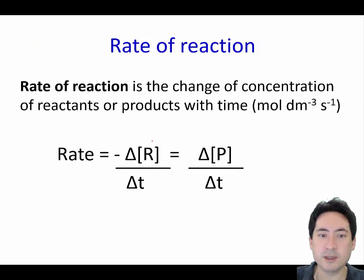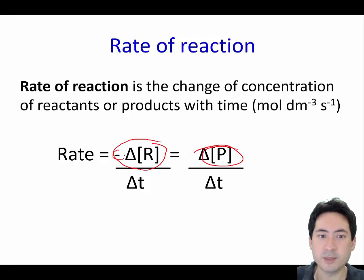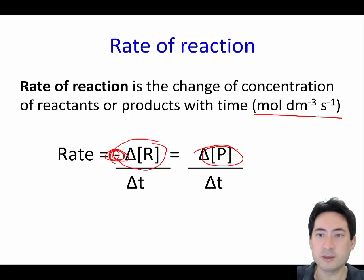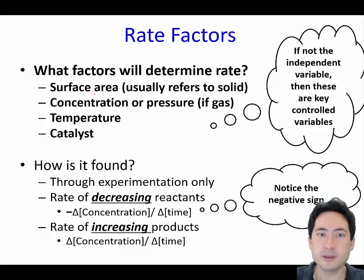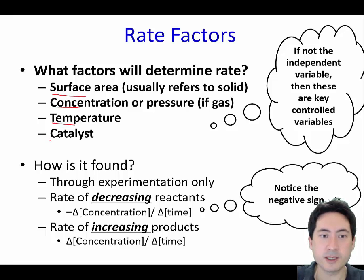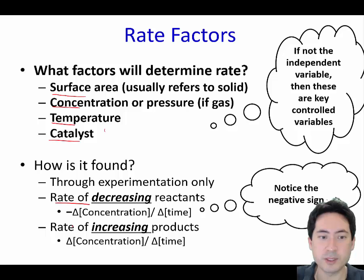Moving on to rates of reaction: you can write this as a decrease in reactants or an increase in products per time. Generally we ignore the negative sign. The units for concentration are moles per liter per second. In class you'll do a range of different experiments. The variables you can change are surface area, concentration, temperature, and catalyst — choose one. Then think about what chemicals to use, ensure they're safe, and decide whether to measure change in products or reactants.